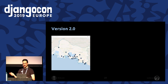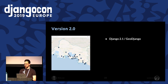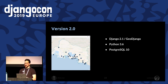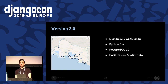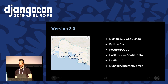The new version was developed with Django 2.1, GeoDjango, and Python 3.6. The data is stored in Postgres 10, and the spatial data is stored in geographic fields thanks to PostGIS 2.4. Leaflet.js 1.4 was used to allow users to display and interact with a dynamic map.